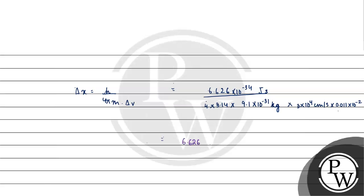Writing out the full expression: 6.626×10⁻³⁴ kg·m²·s⁻¹ divided by 4 × 3.14 × 9.1 × 3 × 0.011 × 10⁻³¹ × 10⁴ × 10⁻².